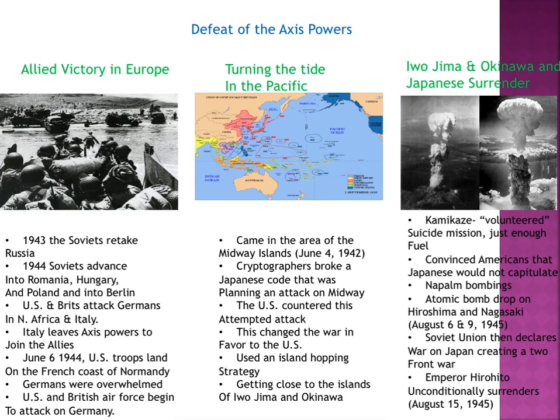The Soviet Union then declared war on Japan, creating a two-front war. Pretty much by this point, Emperor Hirohito — with the bombing and the two-front war — unconditionally surrendered on August 15th, 1945. This brought the end of World War II.